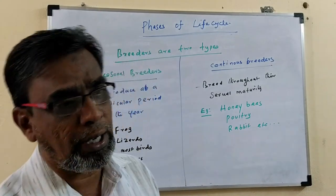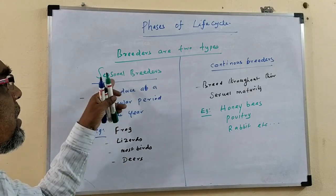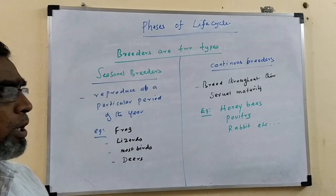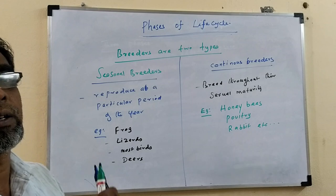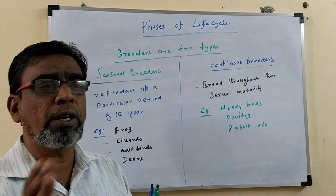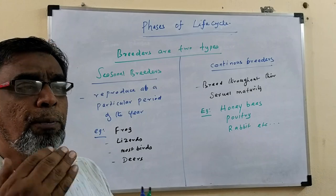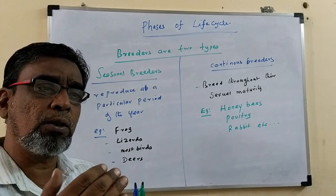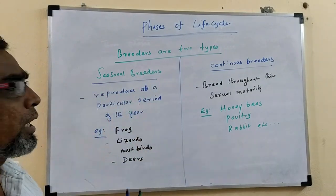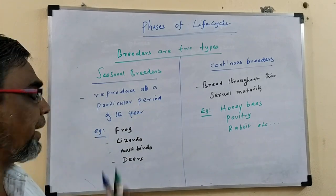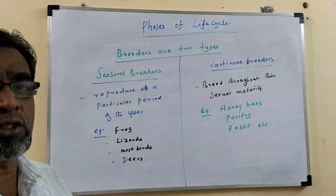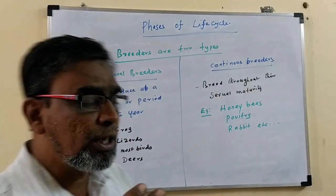In the reproductive phase, breeders are of two types. One is called seasonal breeders and one is called continuous breeders. Seasonal breeders reproduce at a particular period of the year. For example, frogs, lizards, most birds, and deer — these are examples of seasonal breeders.